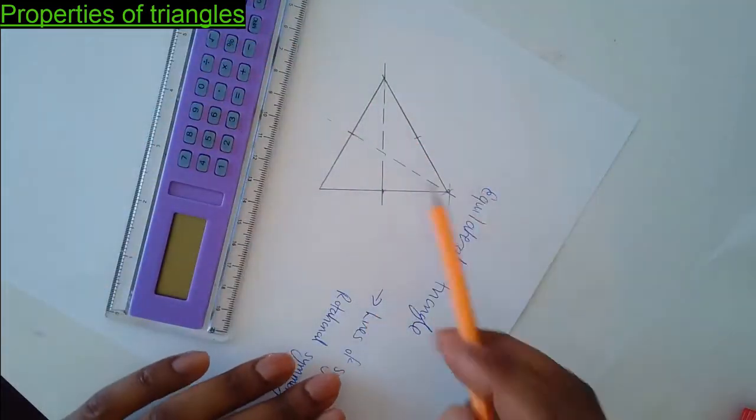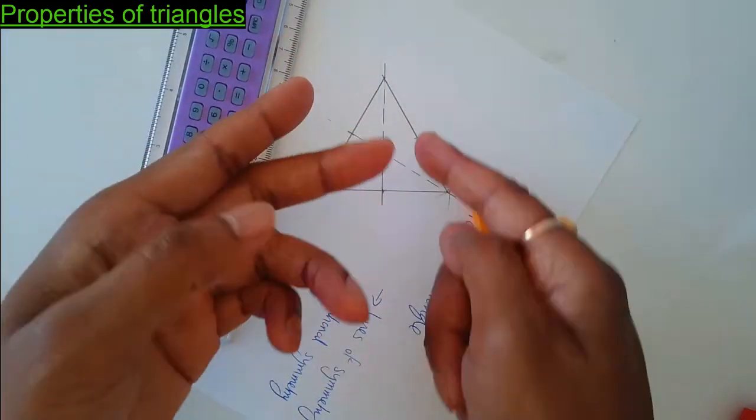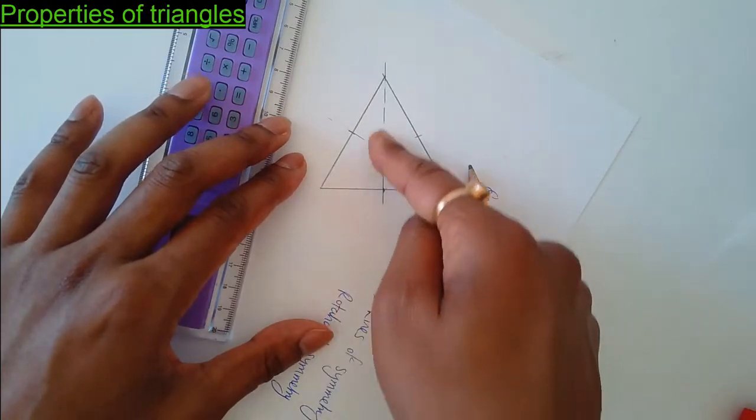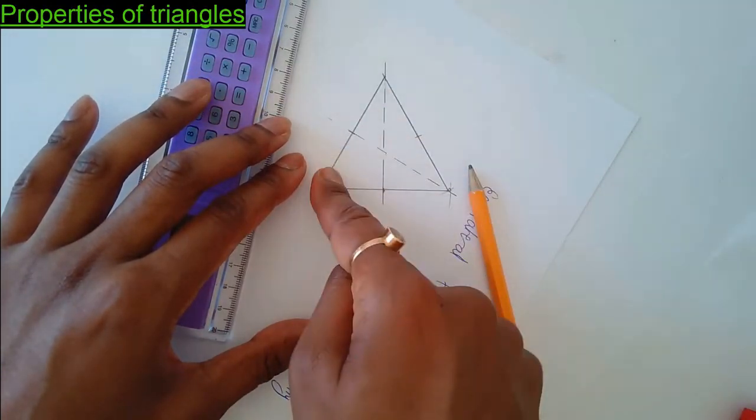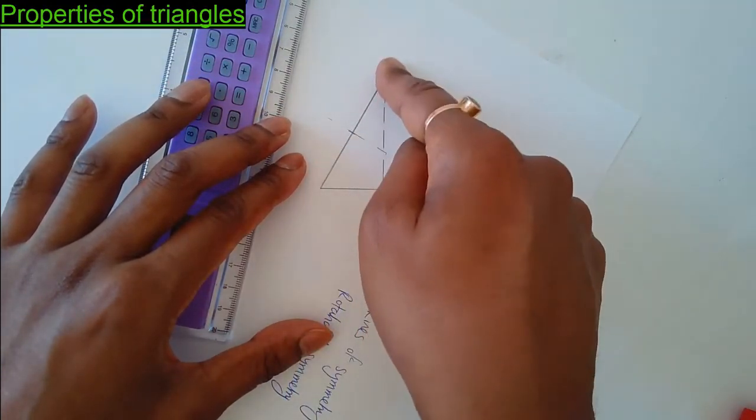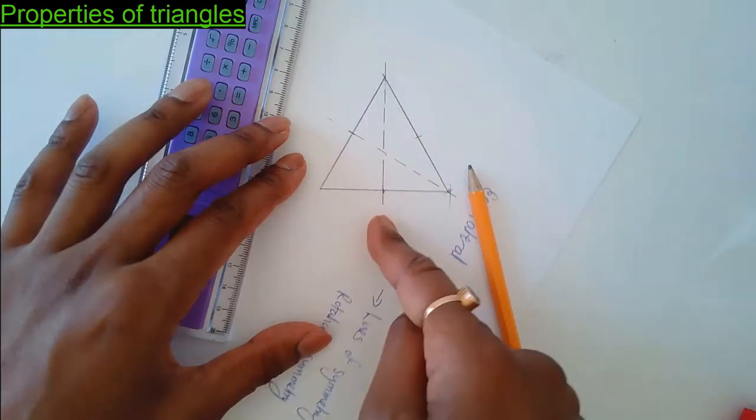There's another line of symmetry, meaning this side over here matches that side. Okay, that line goes right down the middle of this triangle.